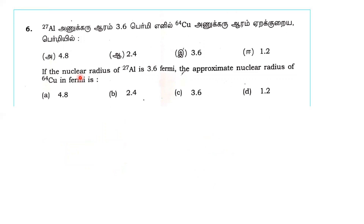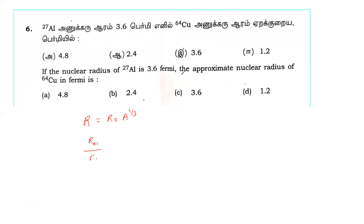Next question: if the nuclear radius of aluminum-27 is 3.6 Fermi, find the approximate nuclear radius of copper-64 in Fermi. Using the formula R equals R0 times A to the power 1/3, we form the ratio: radius of aluminum over radius of copper equals (27/64) to the power 1/3.